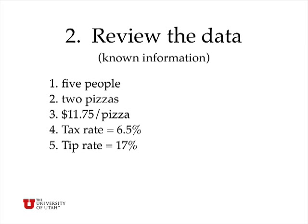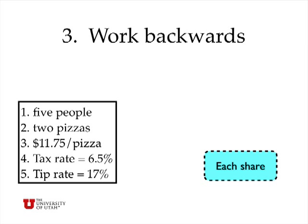So now step two is to review the data, or the known information. There are five people, two pizzas, we know the cost of each pizza, we know the tax rate, and we know the tip rate. So we're ready to go. Now, step three is to work backwards. So if I want to know each share, the cost of each share of this meal, then I know that at the end I'm going to have to divide by five once I know the total cost.